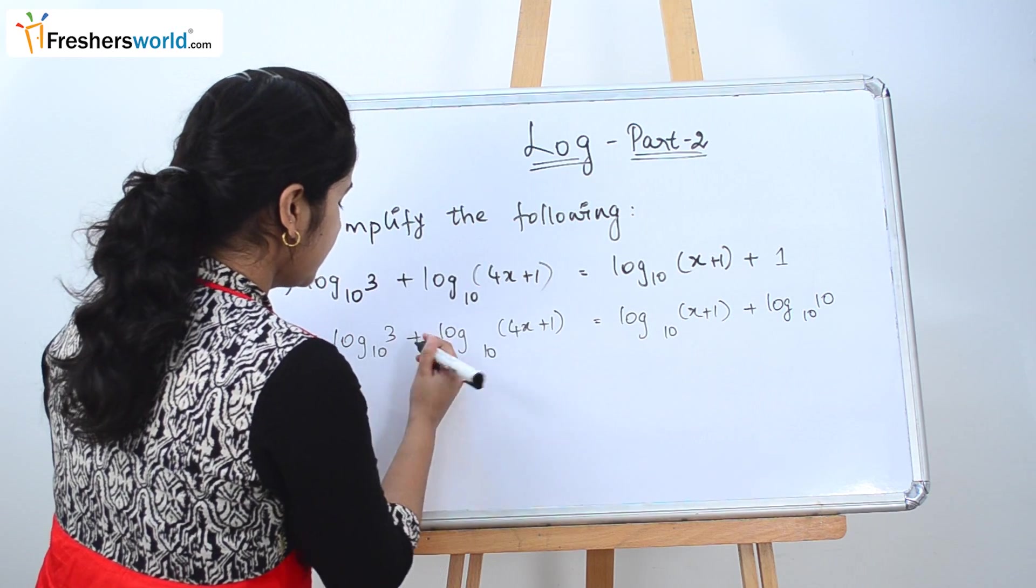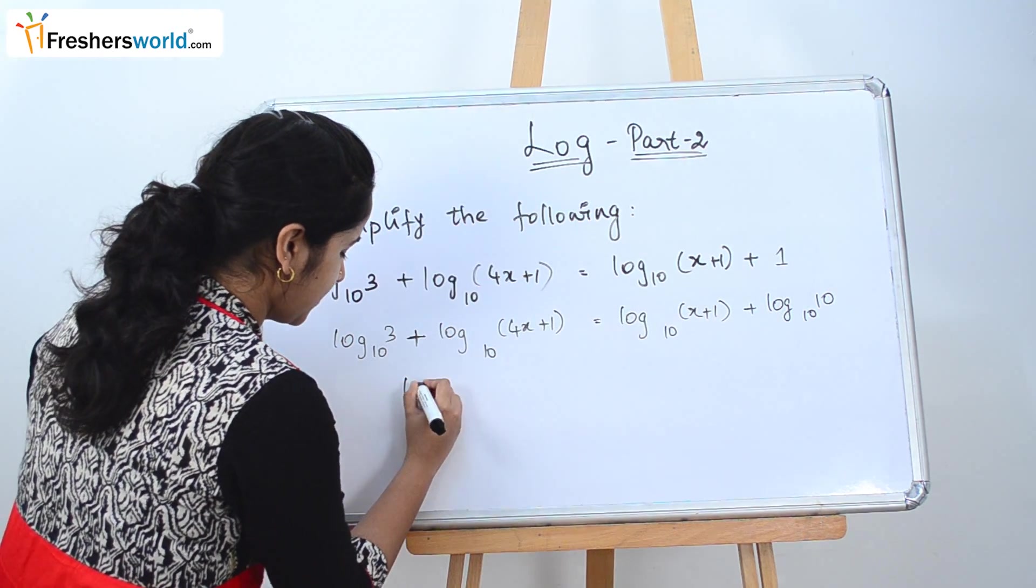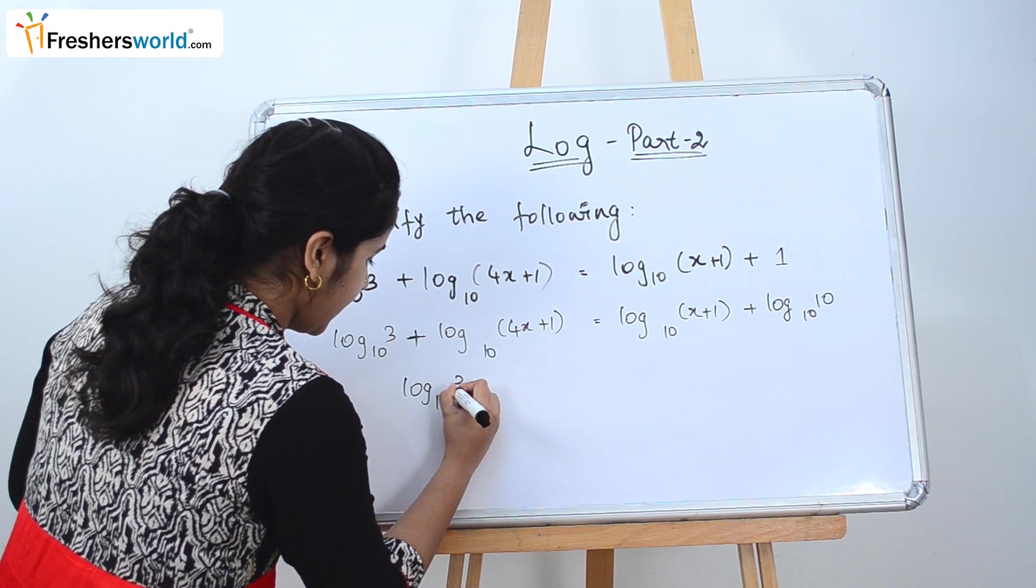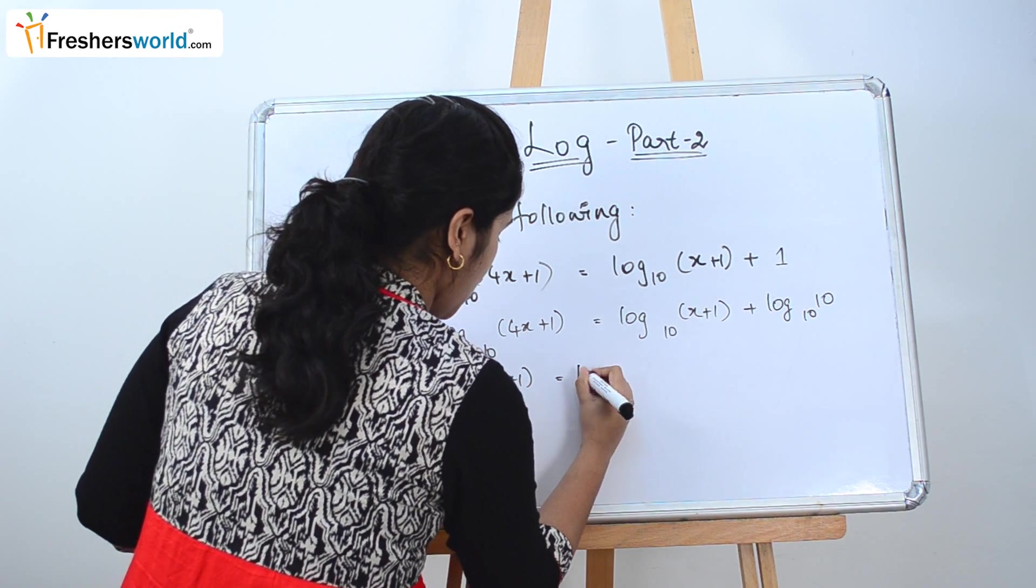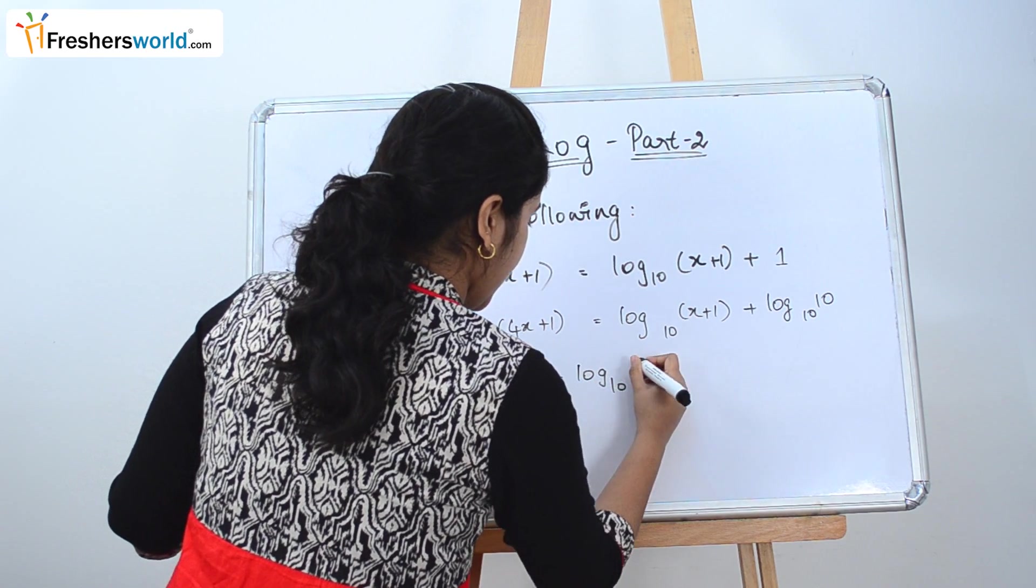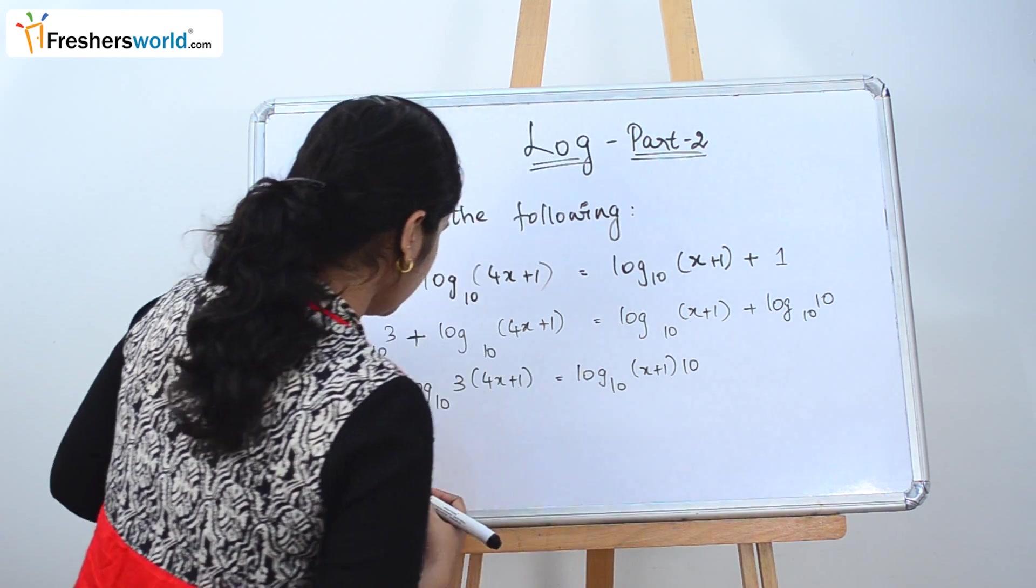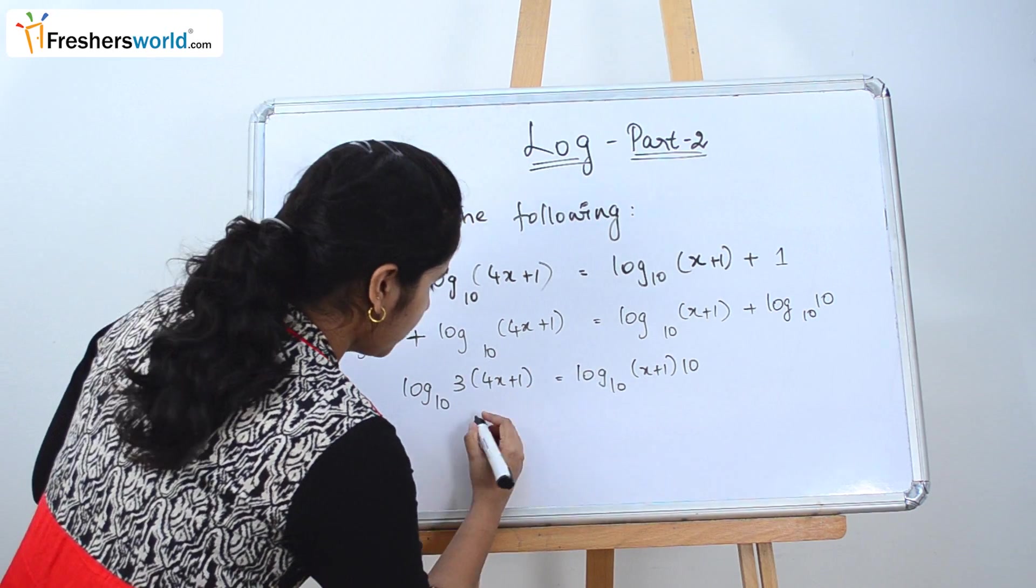Let's just, instead of plus, we can multiply it here as per our basic concept. So log₁₀[3(4x+1)] = log₁₀[(x+1)×10]. So let's just remove log on both sides.